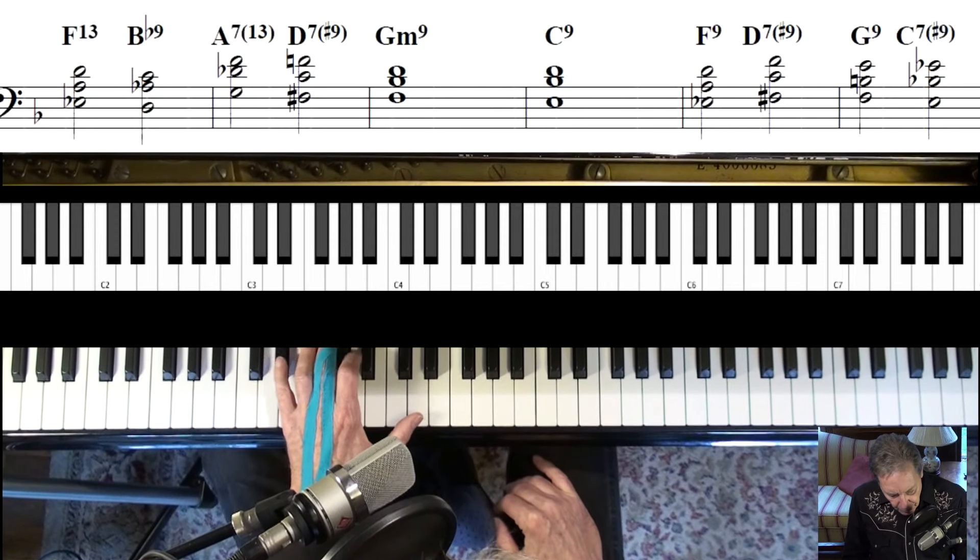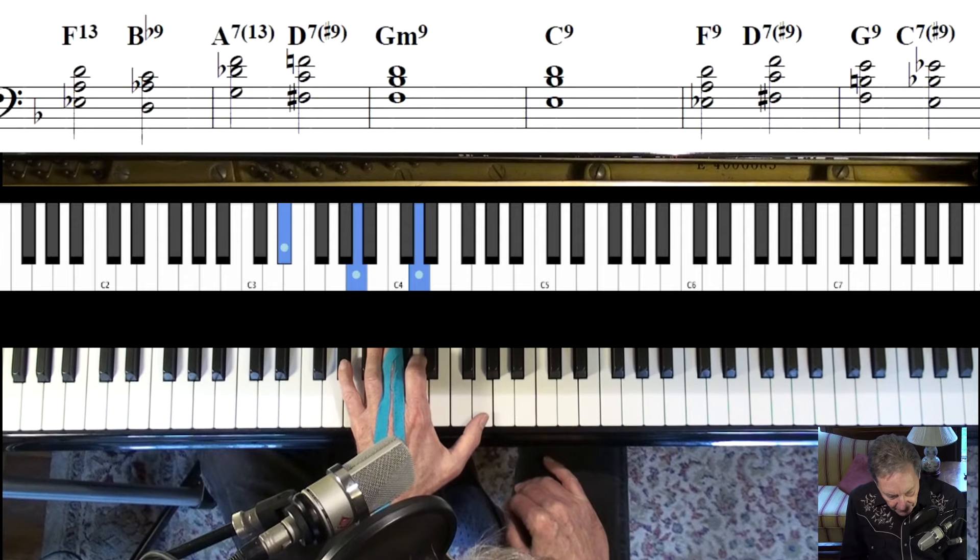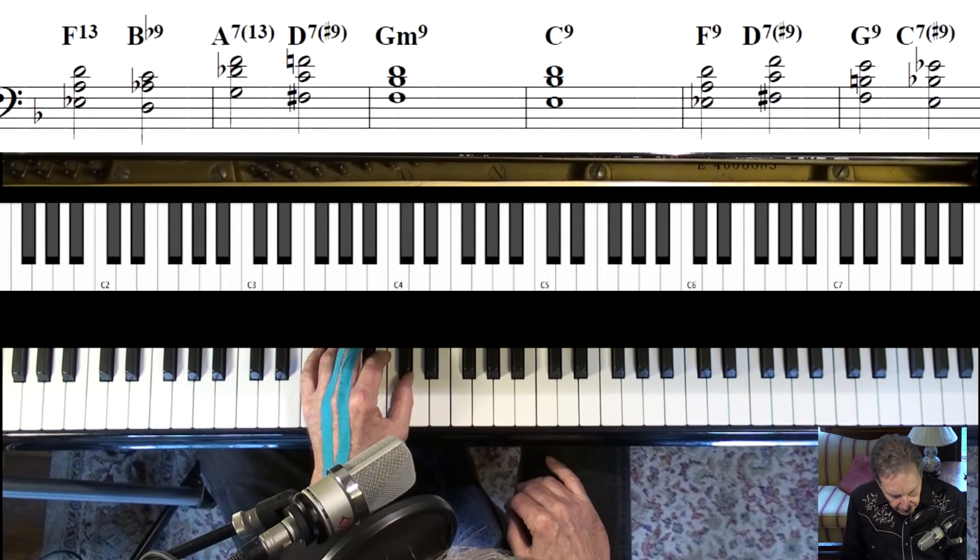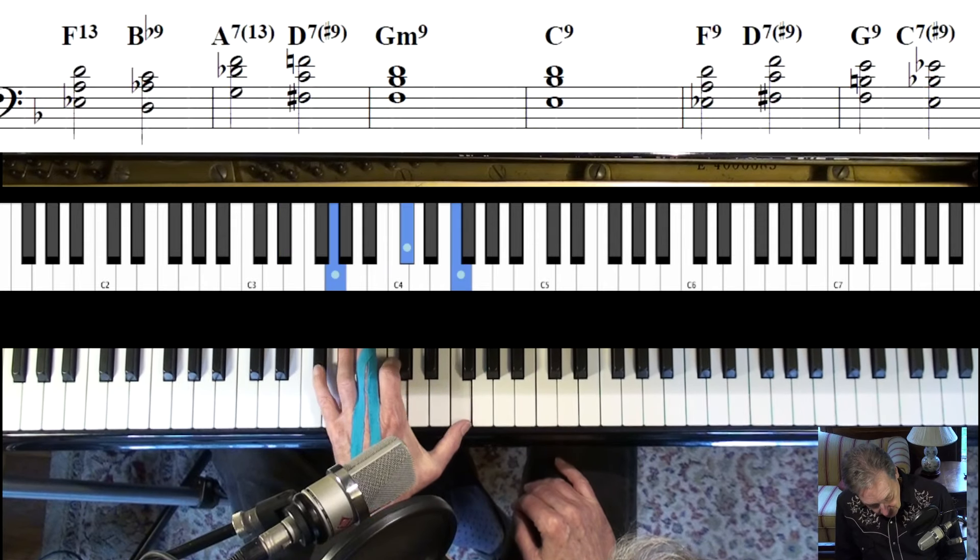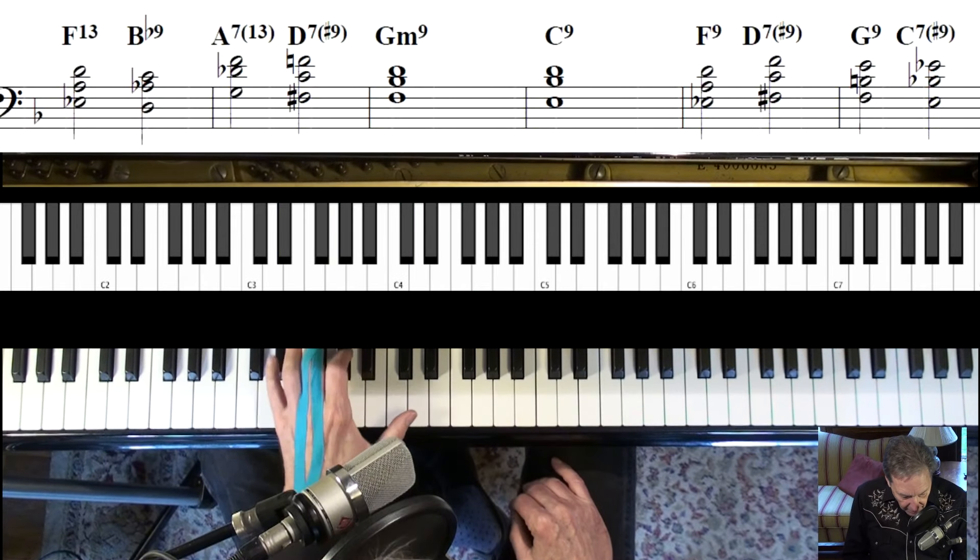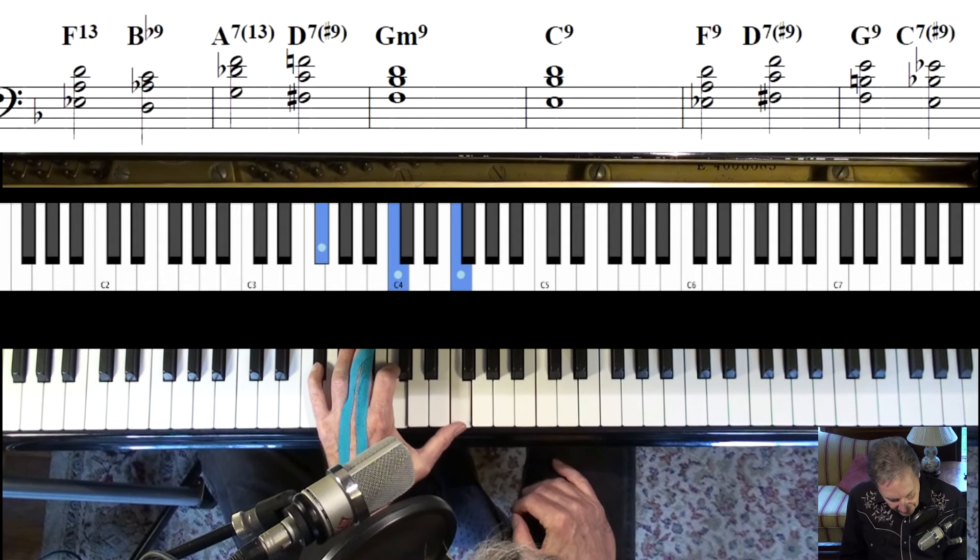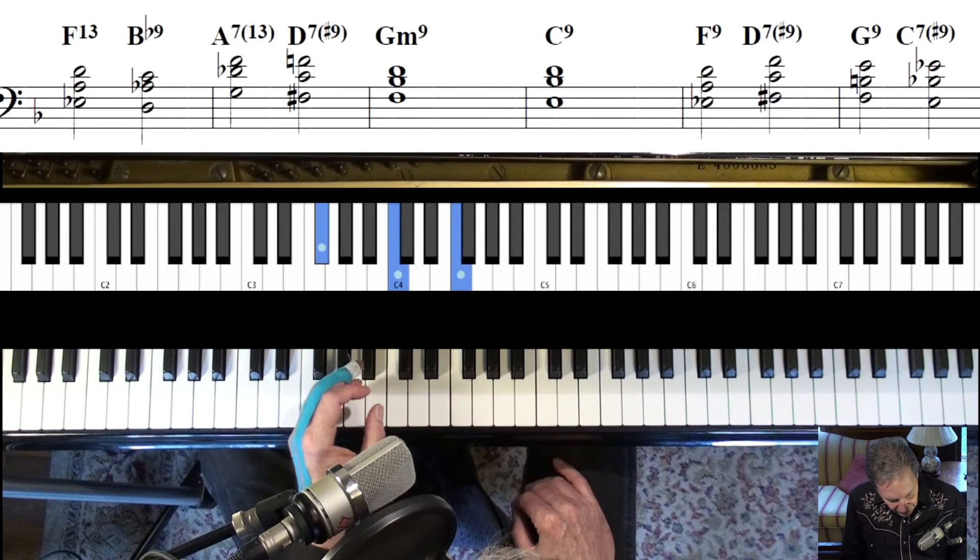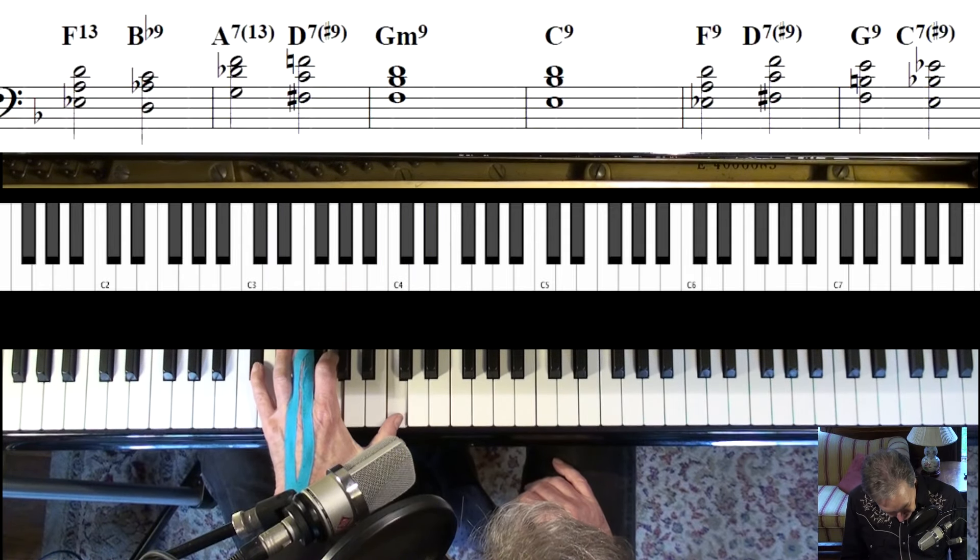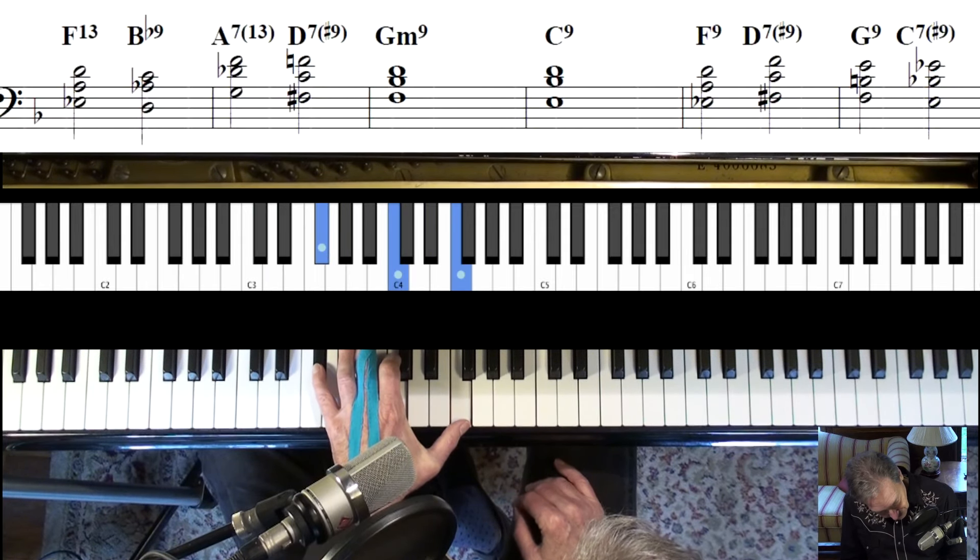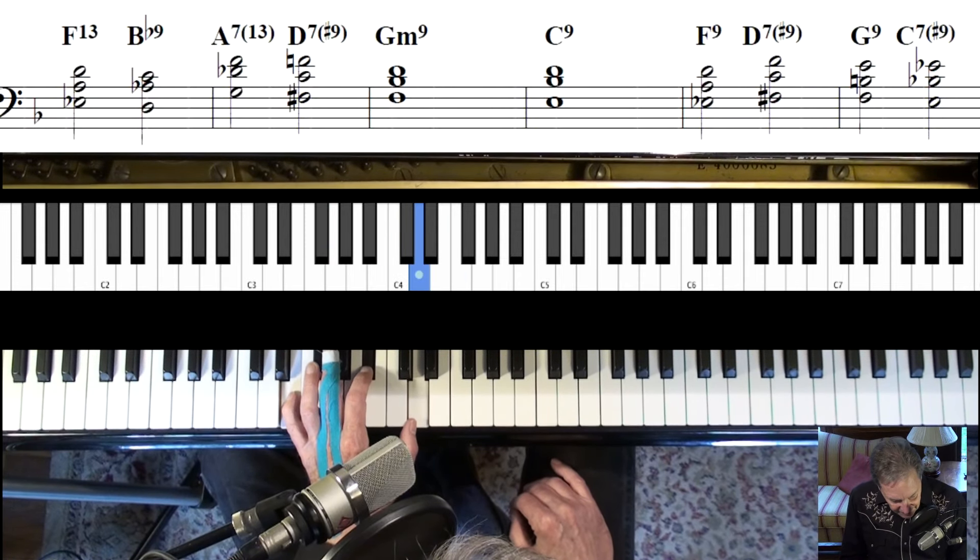One thing more about that first move. At any point, you can jump up a fourth and then continue the move. So I did it here. But I could do it right away like this. See, I come out the same place. Or I could do it a little bit later like this. Either way, I'm going to end back up here on G minor and then C7th.